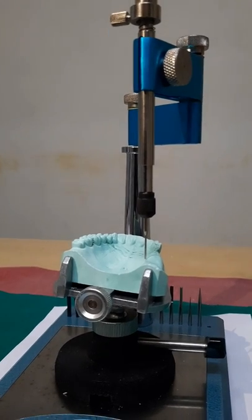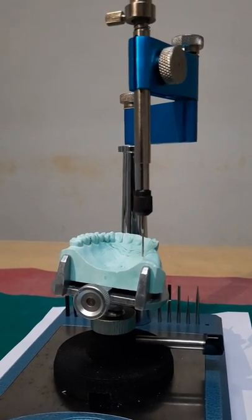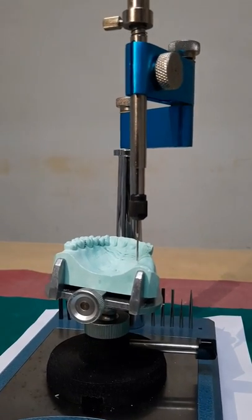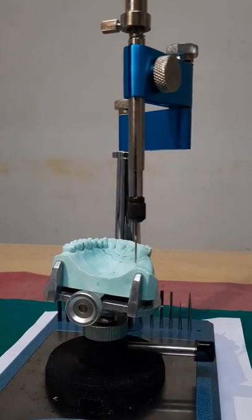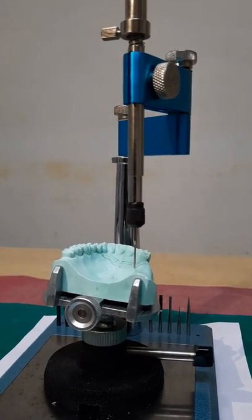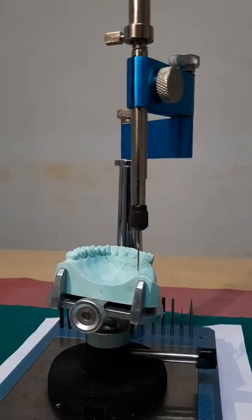Tripoding is basically a procedure in which we make marks on the cast in a single plane which is perpendicular to the surveying rod and which assists in repositioning the cast on a surveyor again.